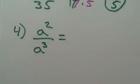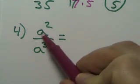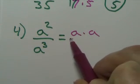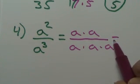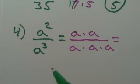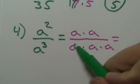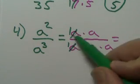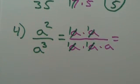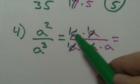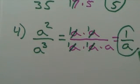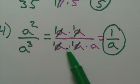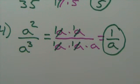We can do the same thing with variables. Example four: a squared over a to the third. A squared is a times a, and a to the third is three of those. So a will go into a — a goes in there once and a goes in here once, these cancel each other out. A goes in here once, a goes in there once. What we're left with on top is one times one, which is one. On the bottom, one times one times a is just the letter a, because one times anything is anything. So the answer is one over a.